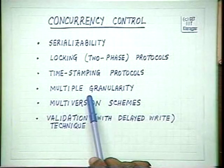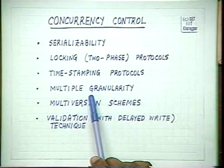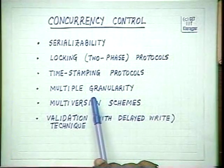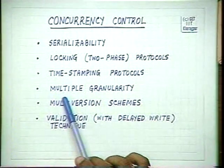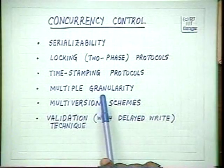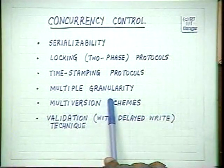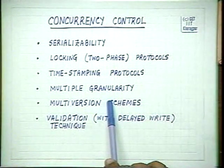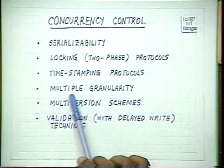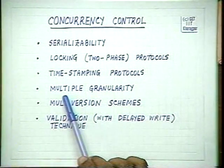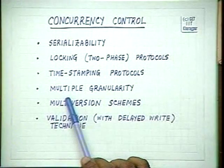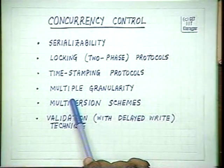The next approach after ensuring consistency is to enhance concurrency as far as possible. We saw Thomas's right rule in timestamping protocols, by which we could increase concurrency. In the case of locking mechanisms, in the previous lecture we saw the multiple granularity protocol where the database is broken up hierarchically into regions, then files, then records. By locking and unlocking them in a proper two-phase manner, we can save a lot of time on locking and unlocking various portions of the database.